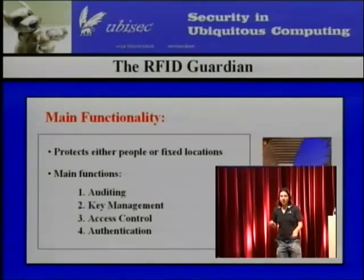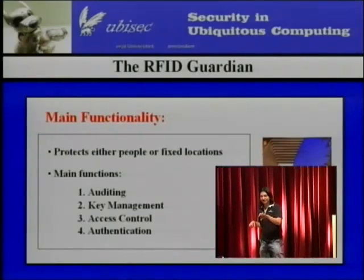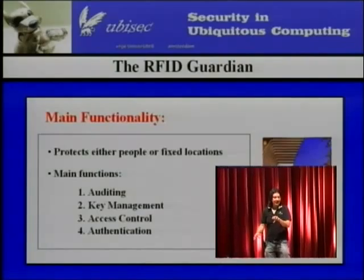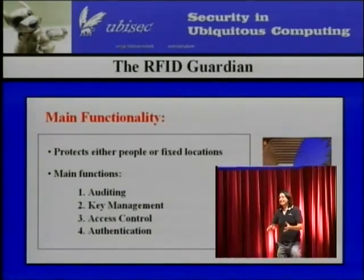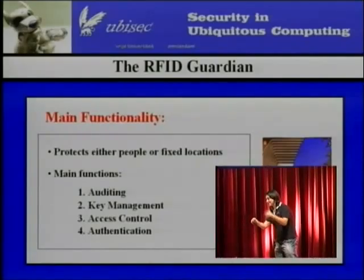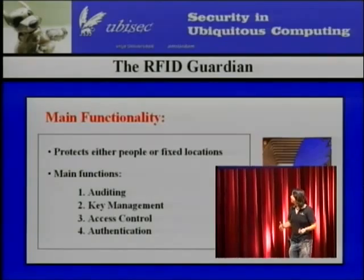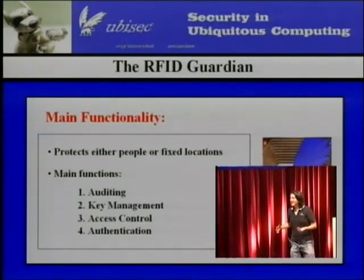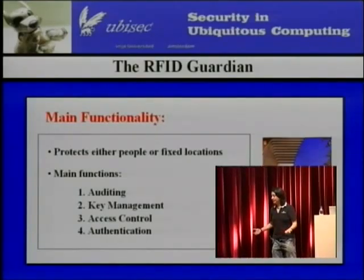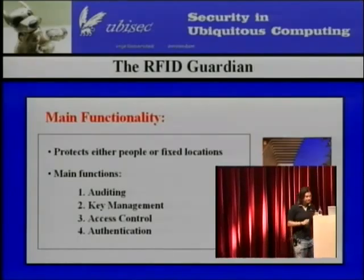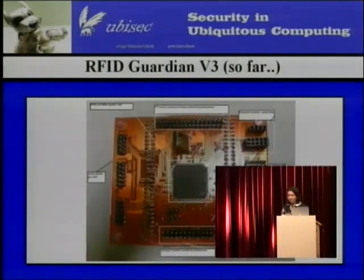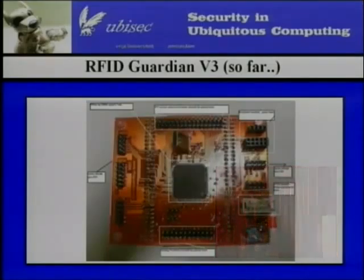The reader announces: I am about to do this query — for example, I am about to query your passport. It throws a nonce in there so you can't replay it, then encrypts it with the session key. Immediately after sending this receipt, it sends the query. It has to happen immediately afterwards so an attacker won't inject their own query in between. If an attacker tries to inject something at the same time, it'll just be garbled due to interference. In this way, we are able to know that a particular query is coming from a particular reader. That's how the Guardian does it.